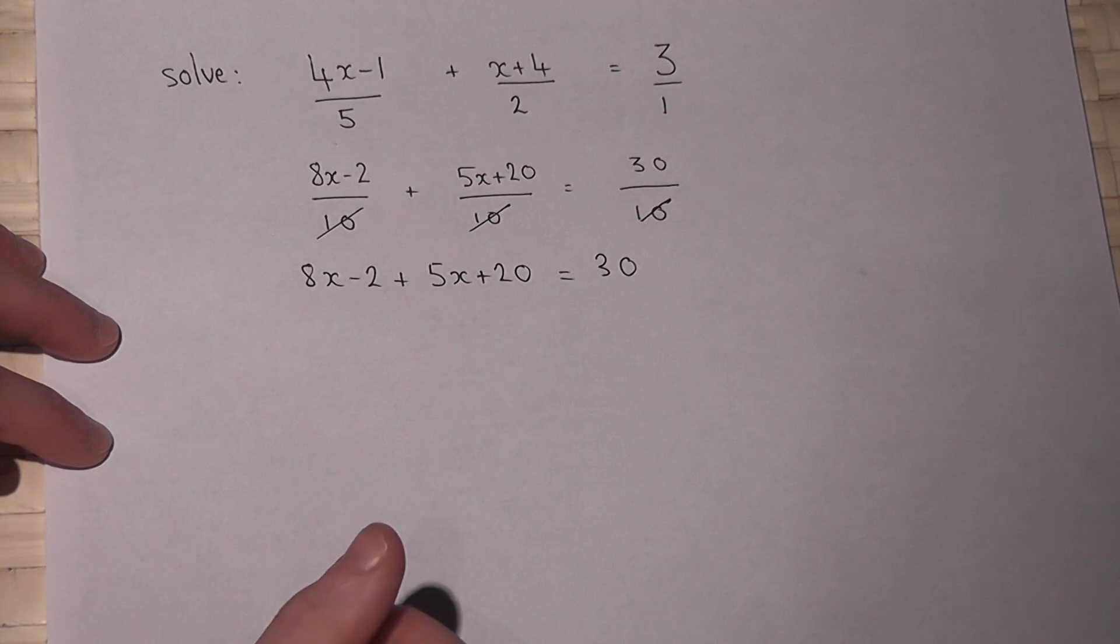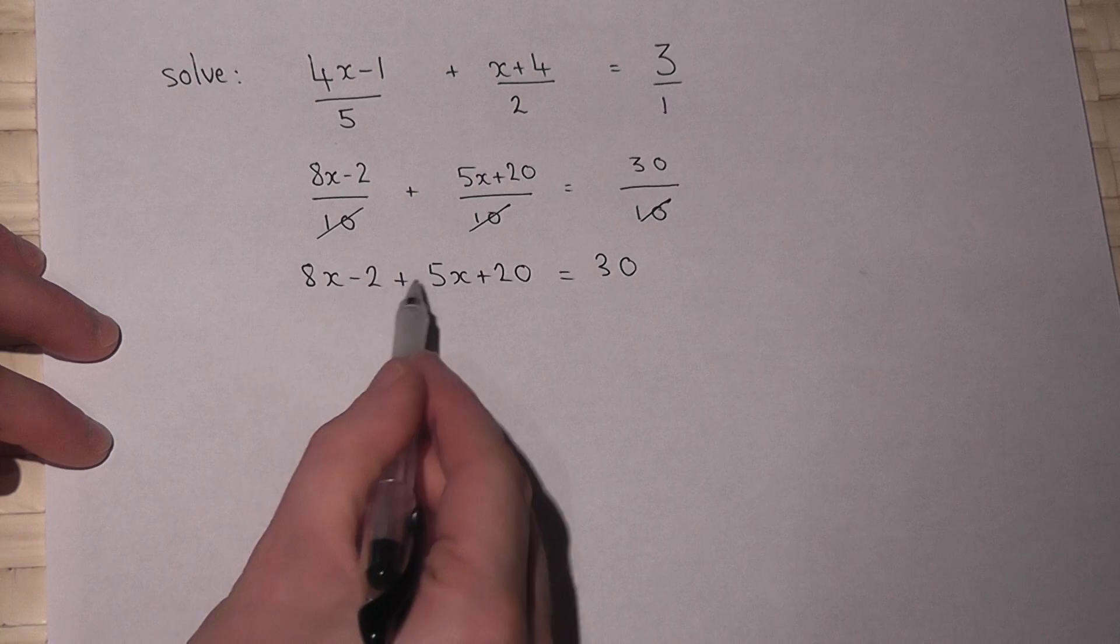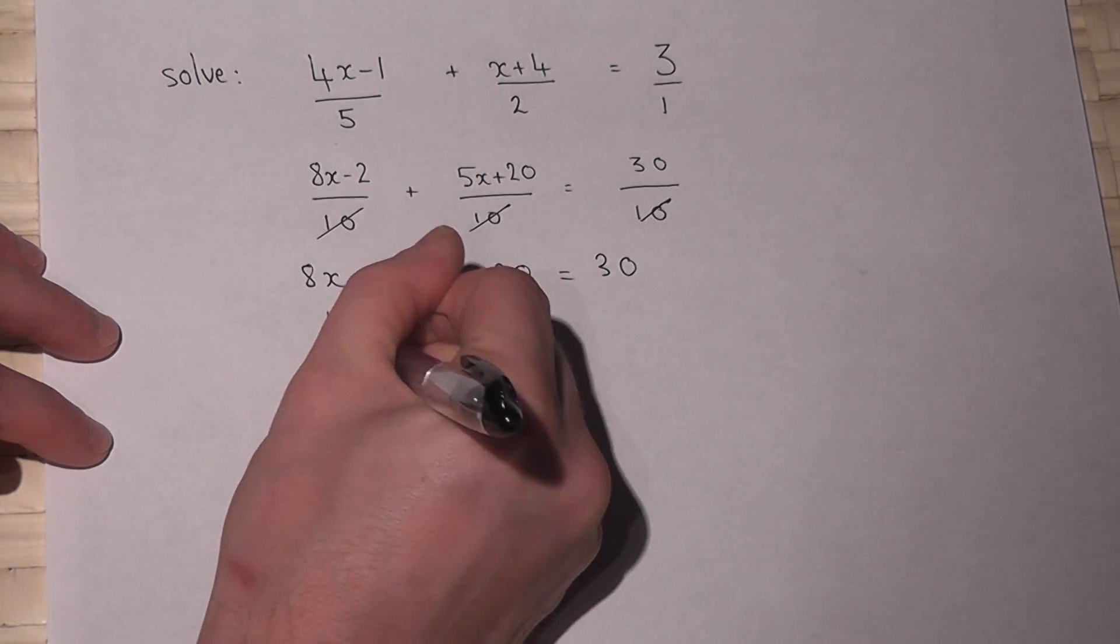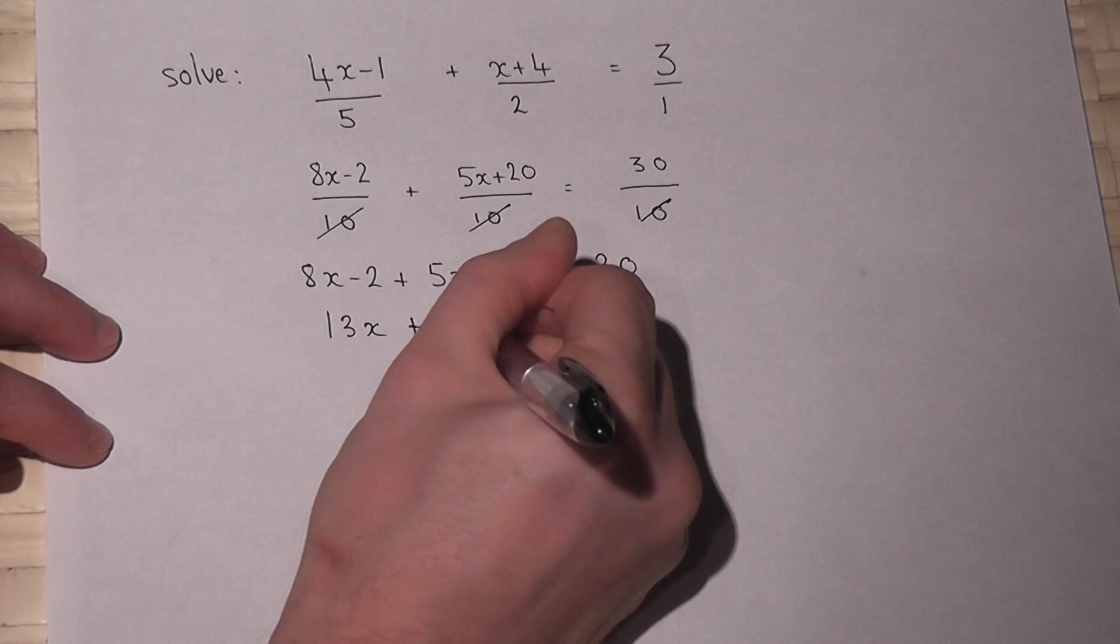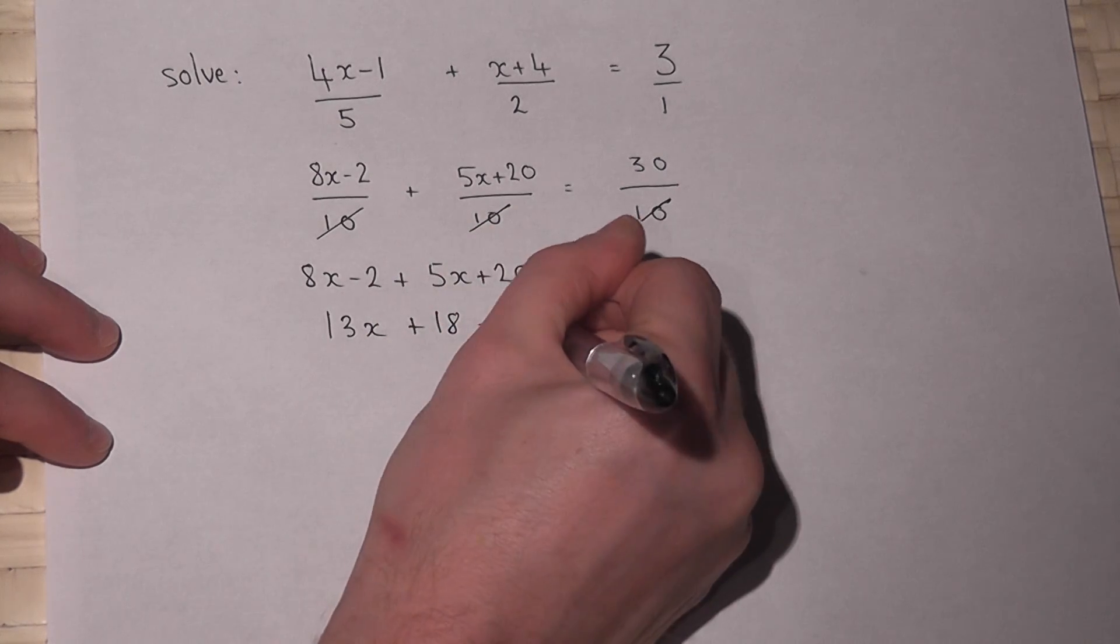I can collect like terms. So 8x plus 5x is 13x minus 2 plus 20 is plus 18, and that equals 30.